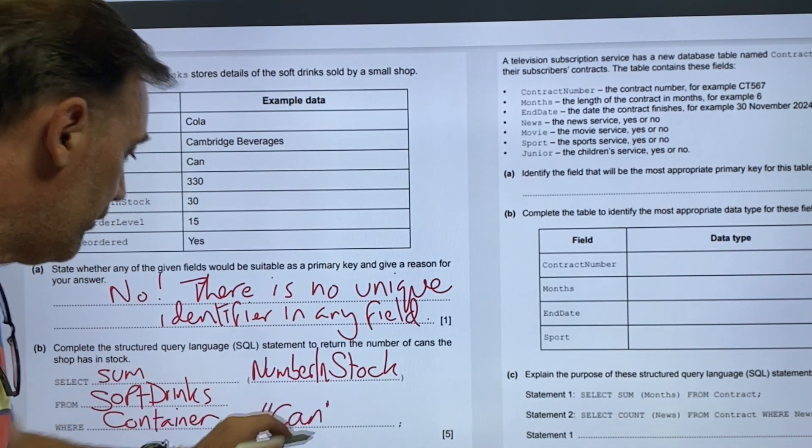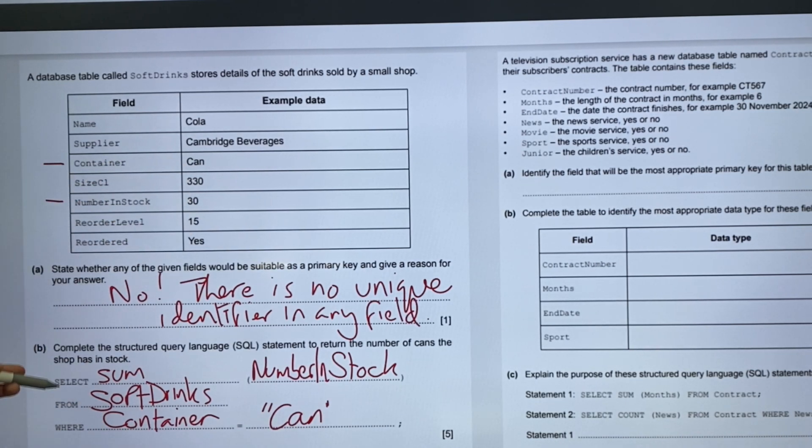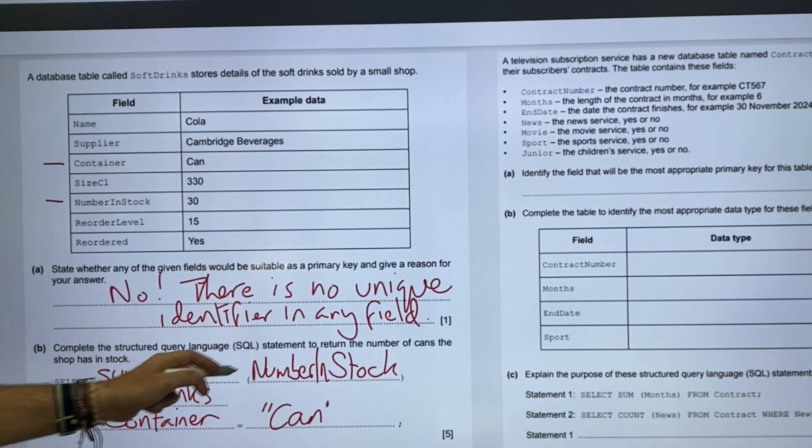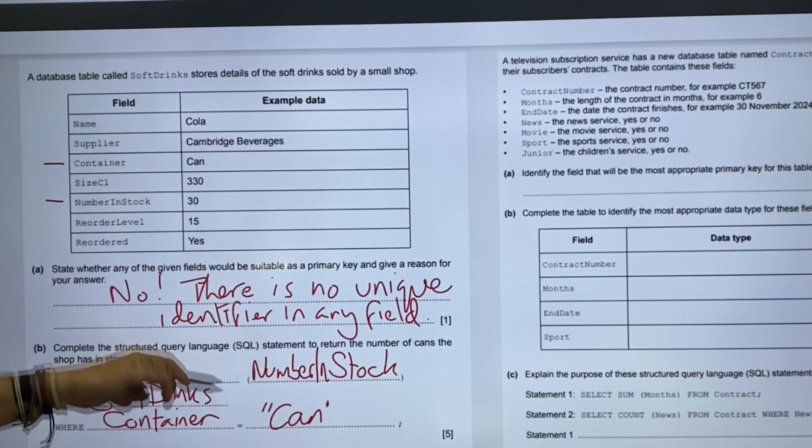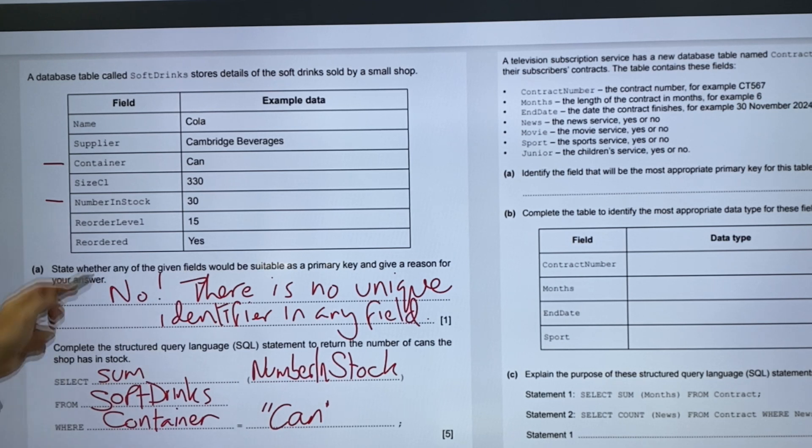Not cans, can. So select the sum, the total number in stock from soft drinks, where the container equals can. It'll sum up every time we get some data where there's a container as a can, it's going to sum up the number in stock. Seems straightforward.